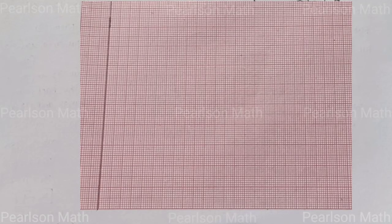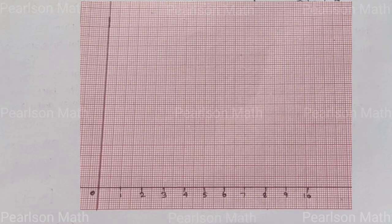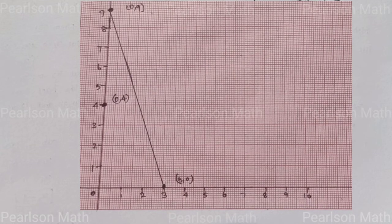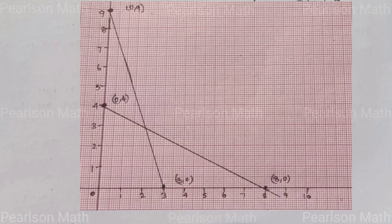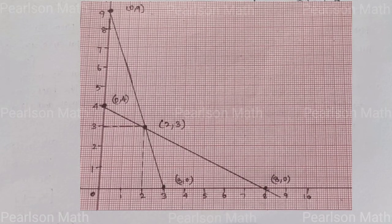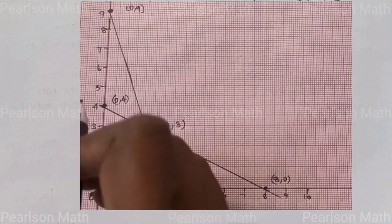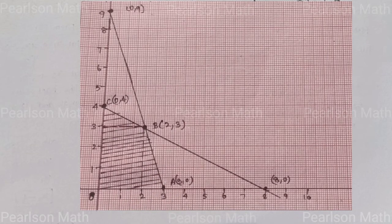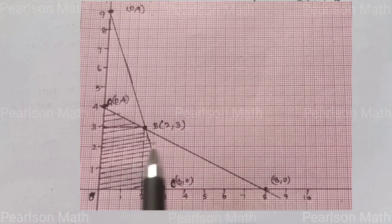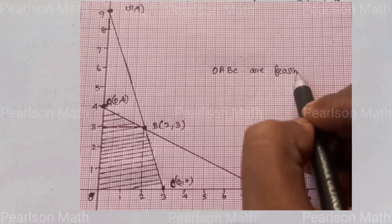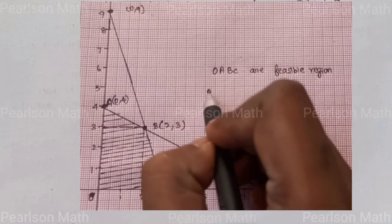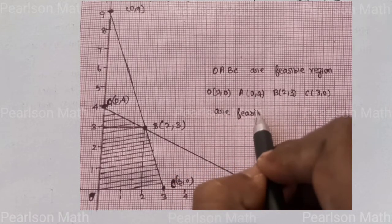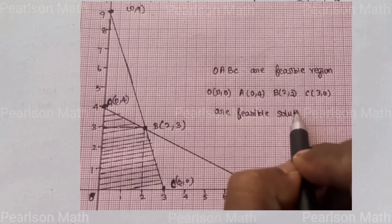Now draw the graph. Plot x-axis and y-axis. For the first equation, join points (0, 9) and (3, 0). For the second equation, join points (0, 4) and (8, 0). The intersection point is (2, 3). Label the corner points as O, A, B, and C. For maximization, shade the feasible region inside the bounded area. The corner points O, A, B, C form the feasible region, and these are the feasible solutions.